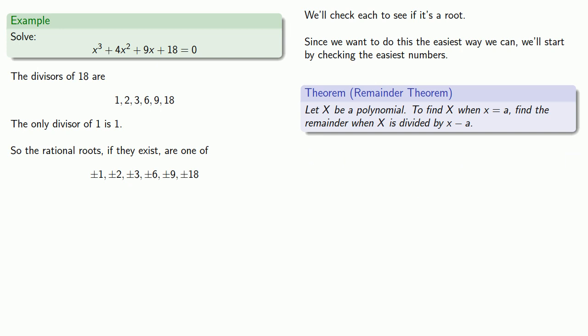So let's see if x equals 1 is a root. Remember, this means we want to know if x equals 1 makes the polynomial 0. And we can do that by finding the remainder when we divide by x minus 1.